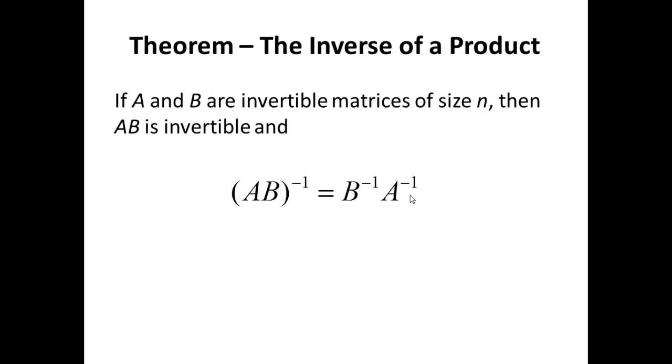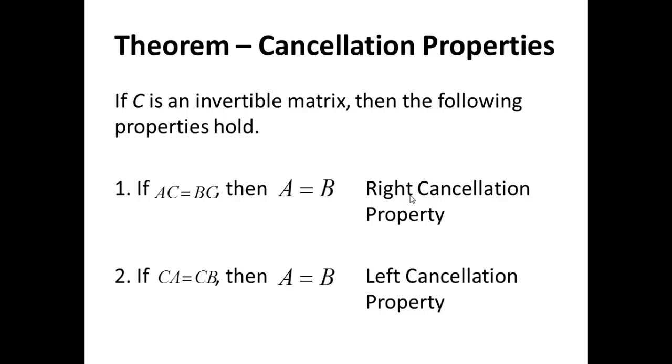Another theorem: Cancellation properties. If C is an invertible matrix, i.e., C inverse exists, then the following properties hold. If AC equals BC, then I can execute right cancellation and end up with A equals B. If CA equals CB, I can execute left cancellation and end up with A equals B.